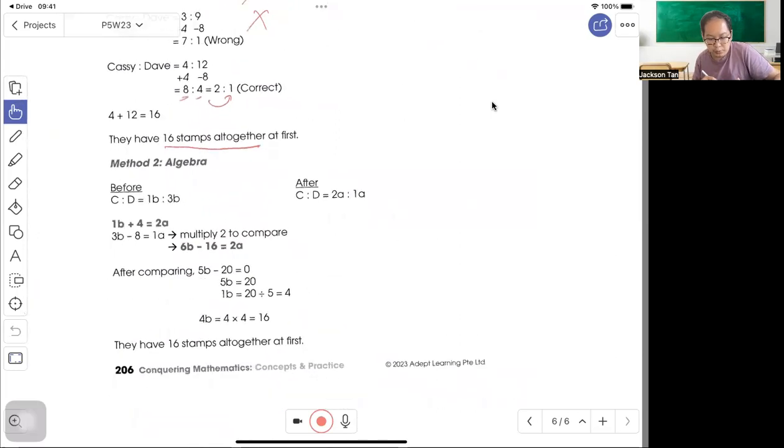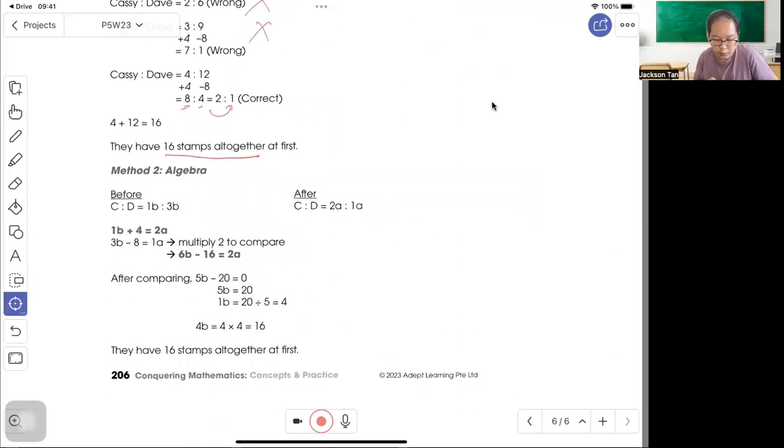Method 2 is algebra. Get the ratio 1 to 3, 2 to 1, and put B stamps for before, A stamps for after. So 1B before gives you 2A, 3B minus 8 stamps gives 1A. So you compare. Times 2 you get 6B minus 16 equals A. So it's that CB minus 1B, 5B minus 16 minus 4 is minus 20.